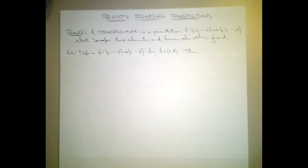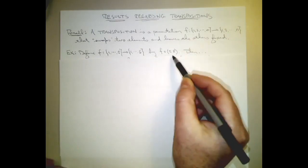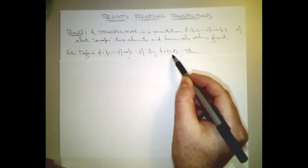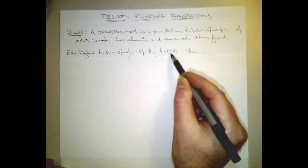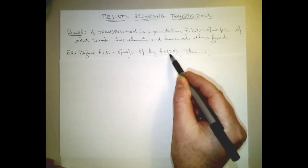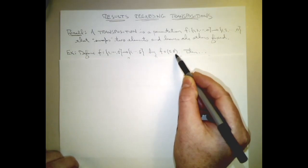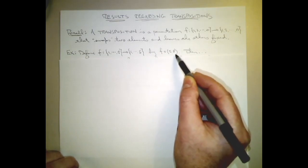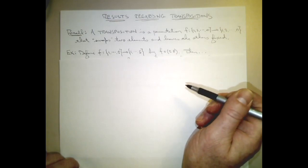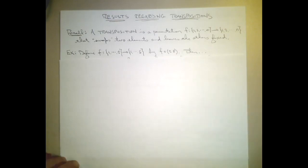So let's look at a particular example. We'll consider a function f from the set {1,...,5} onto the set {1,...,5}, defined by f equals the cycle (2, 5) in cycle notation. So this says 2 gets sent to 5, 5 gets sent to 2, and the absence of all the other elements from this cycle is our signal that f sends all other elements to themselves.